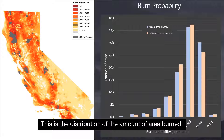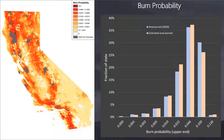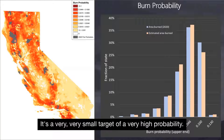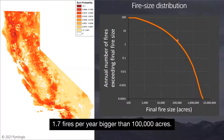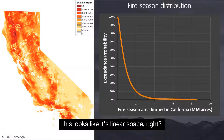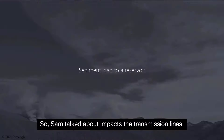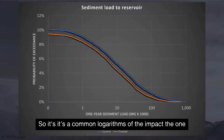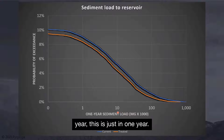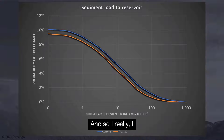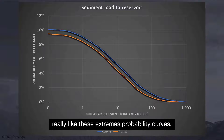This is the distribution of the amount of area burned. It's a very, very small target of a very high probability — 1.7 fires per year bigger than 100,000 acres. This looks like it's linear space. So this is an exceedance probability curve. Sam talked about impacts to transmission lines — it's the common logarithms of the impact, just in one year. And so I really like these exceedance probability curves.